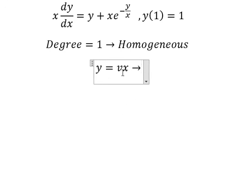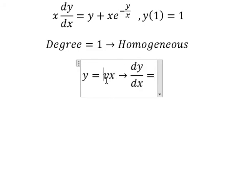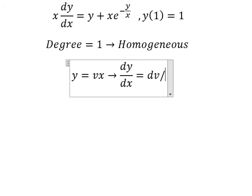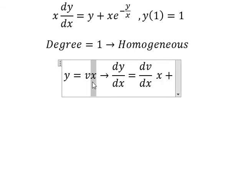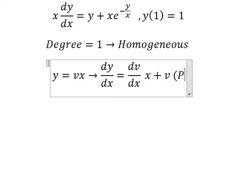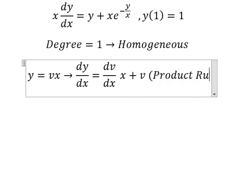Later we need to do first derivative for both sides. First derivative of v, we have dv/dx multiplied by x. First derivative of x, we have number one, so we have v. This is about the product rule of the derivative.